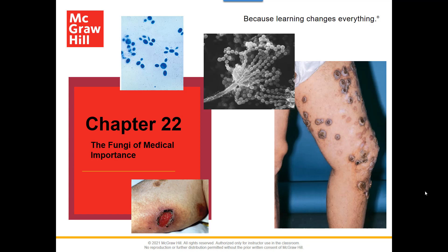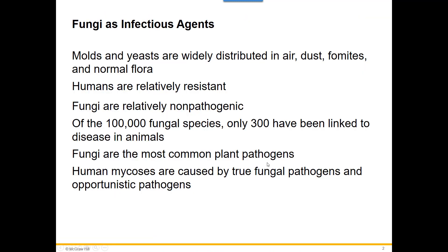If the number of bacteria and viruses we've talked about didn't worry you, we've got a whole chapter on all the fungi that can cause diseases in humans. This chapter we're going to talk about some basics of fungi, how they grow, but we're going to go over some of the true pathogens — the ones that affect even the healthiest individual — some of the opportunistic pathogens, and then some of the superficial or cutaneous ones found on the skin.